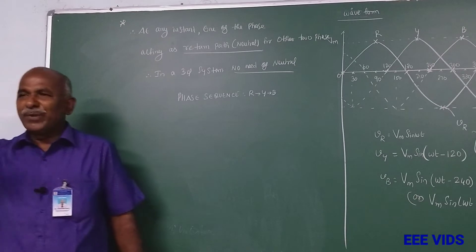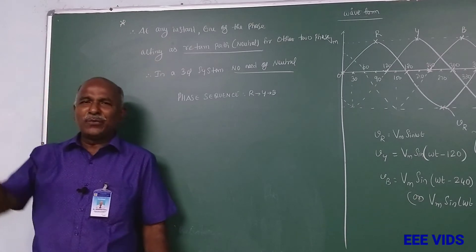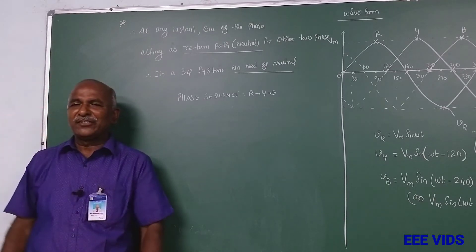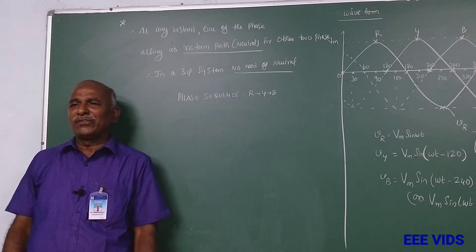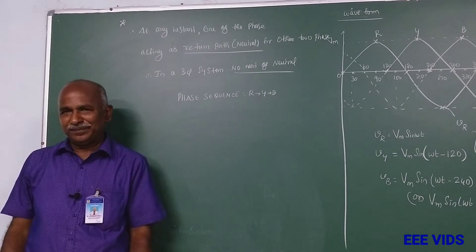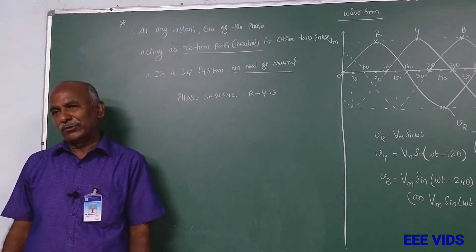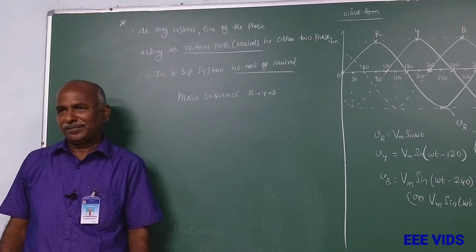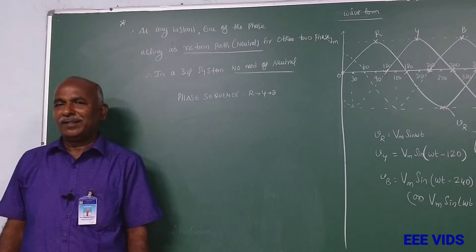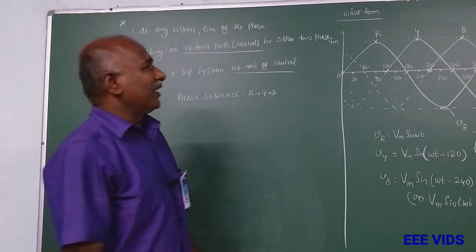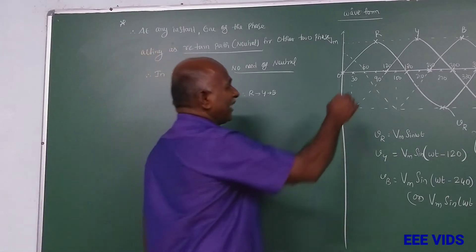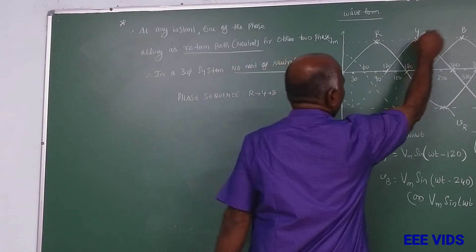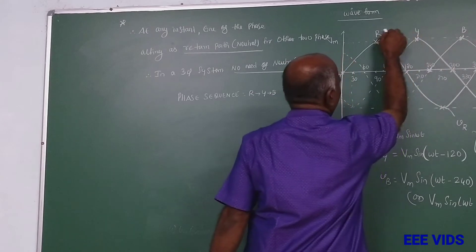Why do you say RYB? The phase sequence RYB refers to the order of reaching the maximum value. The order in which each phase reaches its maximum value.